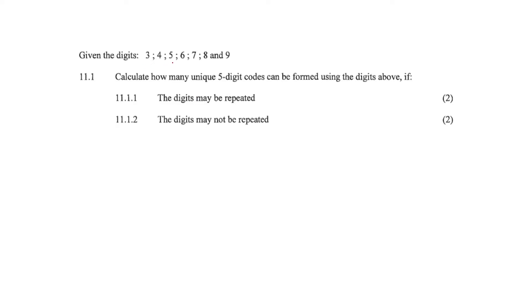Given the digits 3, 4, 5, 6, 7, 8, 9 — calculate how many five-digit codes can be formed using the digits above if the digits may be repeated.